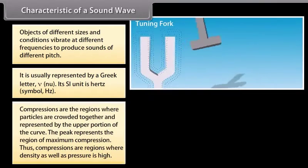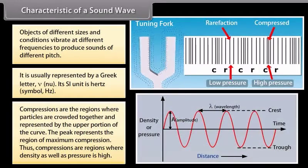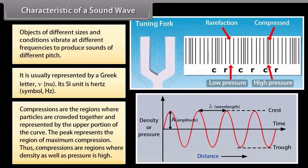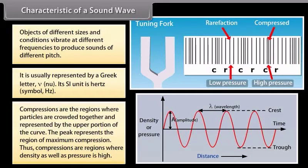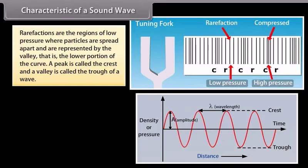Thus, a high pitched sound corresponds to more number of compressions and rarefactions passing a fixed point per unit time. Objects of different sizes and conditions vibrate at different frequencies to produce sounds of different pitch. It is usually represented by a Greek letter nu. Its SI unit is Hertz. Compressions are the regions where particles are crowded together and represented by the upper portion of the curve. The peak represents the region of maximum compression. Thus, compressions are regions where density as well as pressure is high. Rarefactions are the regions of low pressure where particles are spread apart and are represented by the valley, that is the lower portion of the curve. A peak is called the crest and a valley is called the trough of a wave.